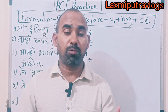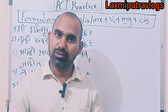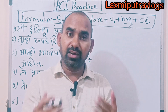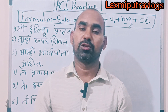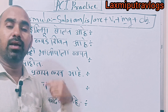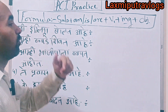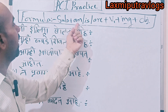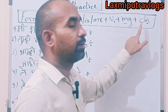We are going to learn Present Continuous Tense to talk about which action is going on at the time of speaking. We will also learn how to write a sentence in Marathi and translate it into English. The formula for Present Continuous Tense is: Subject + am/is/are + V1 + ing + Object.